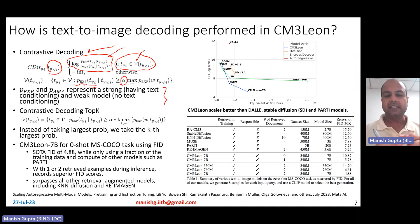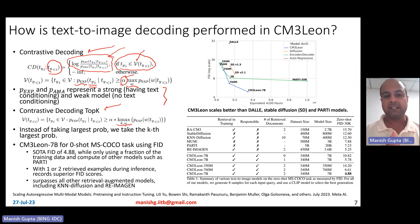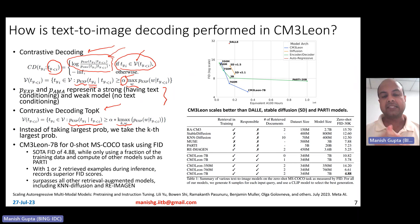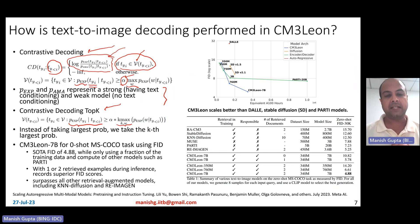They also introduce a variant called contrastive decoding top-k. Instead of using alpha times the maximum probability token, you use alpha times the k-th maximum probability token. For example, if the highest probability is 0.9, the k-th highest is 0.8, and alpha is 0.7, then you consider all tokens with probability between 0.9 and 0.56. You then compute the contrastive score for all candidates and sample from the resulting distribution. The key difference is using the k-th largest probability rather than the largest to define the candidate range.